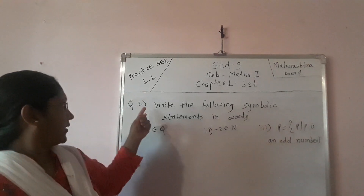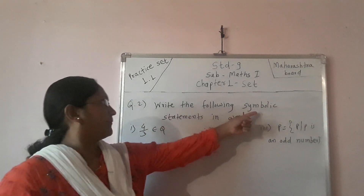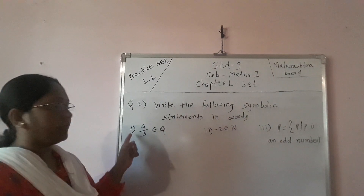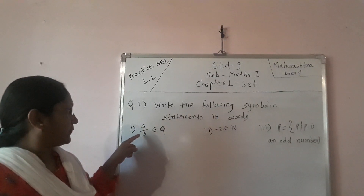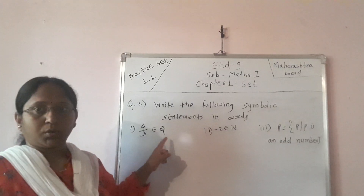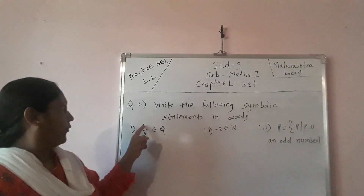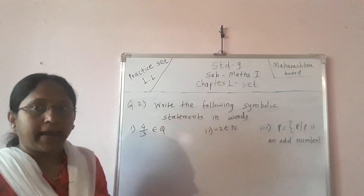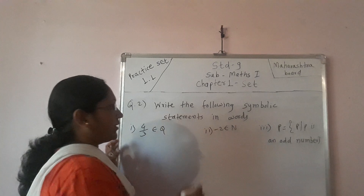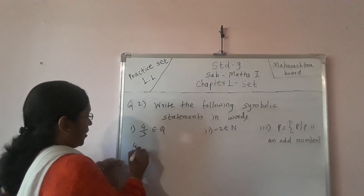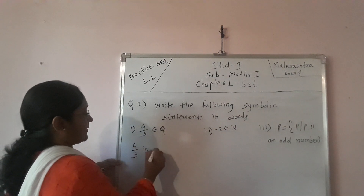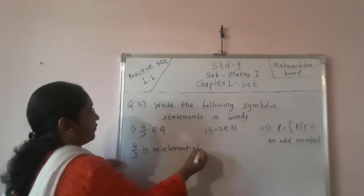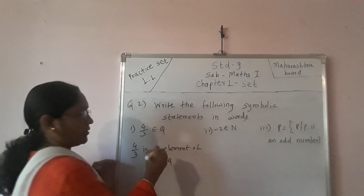Second question: write the following symbolic statements in words. In the first one, 4/3 belongs to Q. The meaning of that is: 4 upon 3 is an element of set Q. And symbolically, we write it as: 4/3 is an element of set Q.